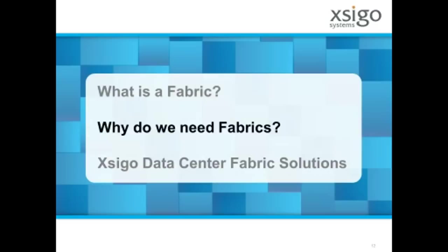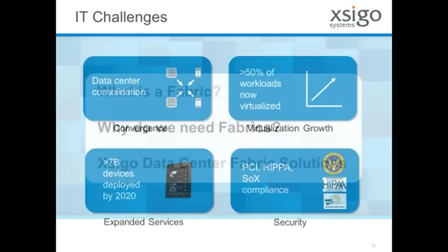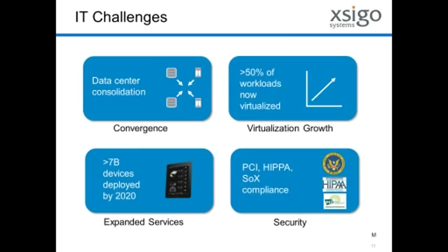Let me say a little bit about why we need fabrics and what the drivers are making this a requirement right now. Really it's four things: convergence — bringing together things because we're consolidating data centers or resources within a data center; the growth of virtualization, which is now past the 50% point; the need for expanded services associated with bring your own device, with more things moving from remote locations or desktops into the data center; and finally security — the need to accommodate new types of information in the data center and do it in a fundamentally more secure way, either because of regulation or because there's just a lot more data that has to be secured in ways we haven't done previously.